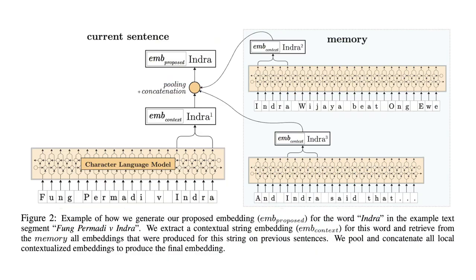Here's a figure showcasing how the pooled contextualized embeddings work. To embed a word, we first compute the contextualized word embeddings within the sentence. We then add this embedding into our memory of contextualized embeddings. We then perform a pooling operation over all the contextualized embeddings for this particular word in the memory to compute the pooled contextualized embeddings. The paper experimented with mean pooling and max and mean pooling element-wise. This pooled contextualized embedding is then concatenated with the original contextualized embedding to capture both the local and global representation of the word, resulting in twice the dimensionality of the original embedding.